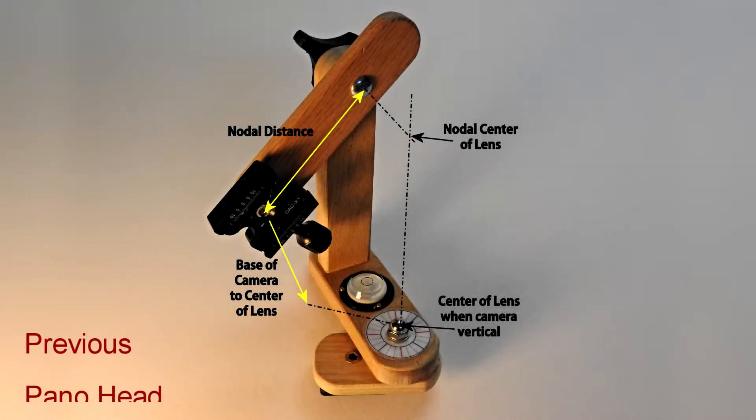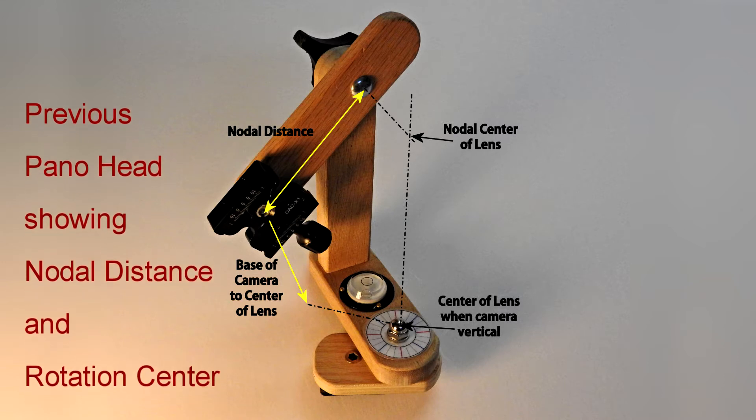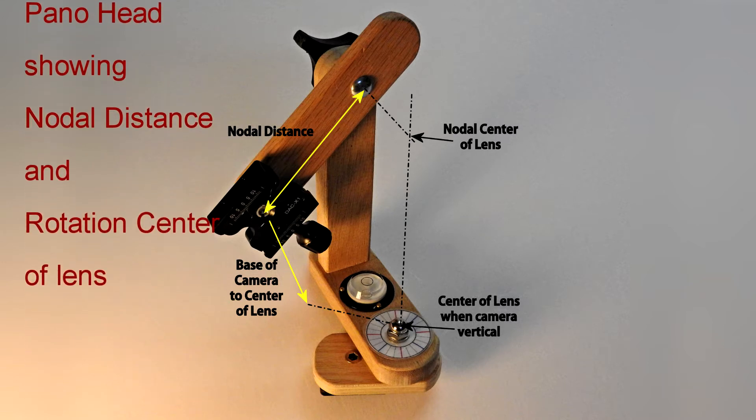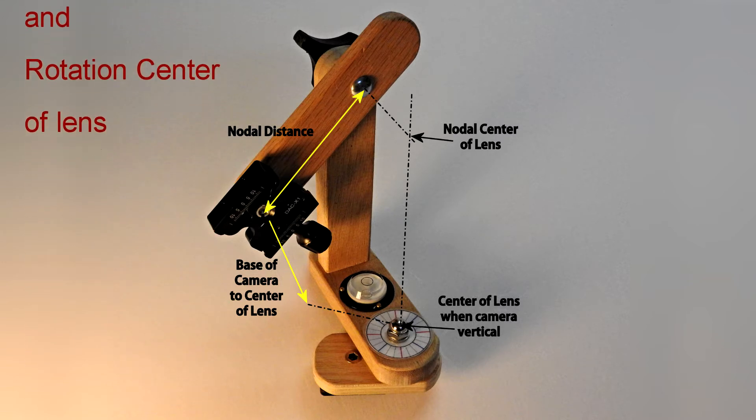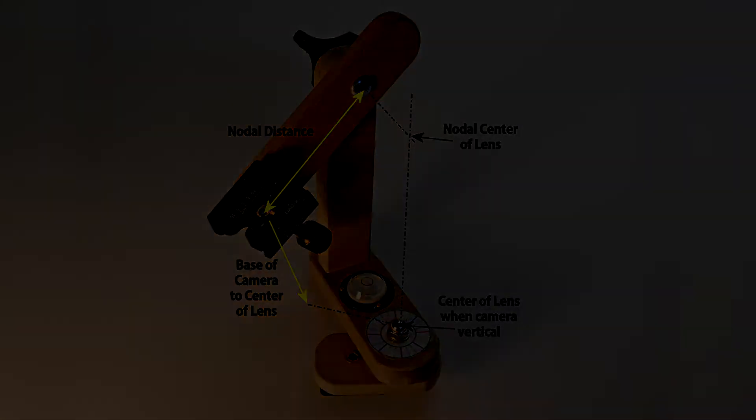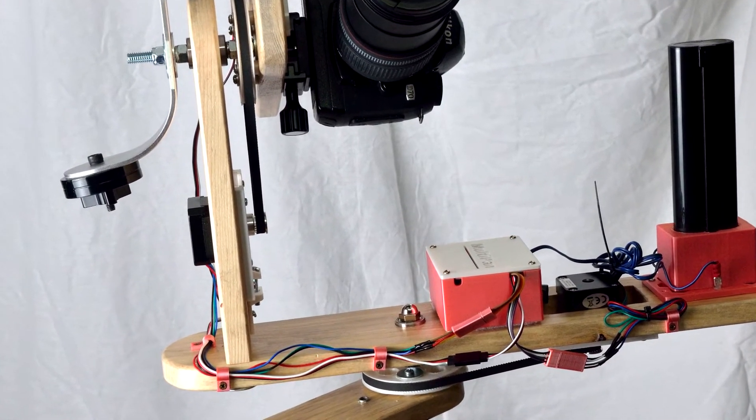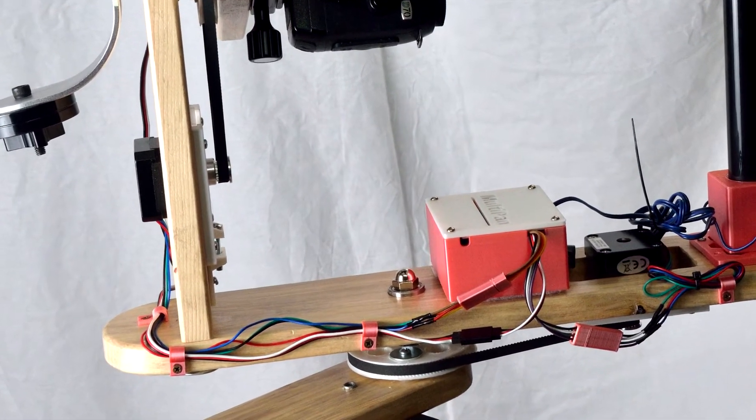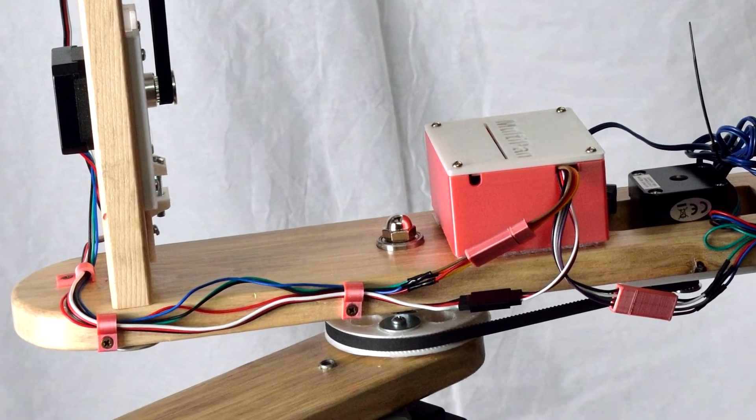You need to determine the nodal distance and the horizontal rotation point for your camera and lens, as with the previous pano head, before drilling the bearing holes in the horizontal support. So assemble the horizontal and vertical supports and the vertical arm with the camera to find the rotation point on the horizontal support.